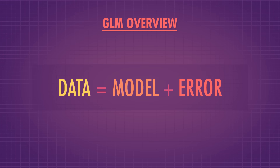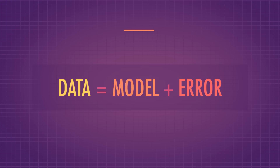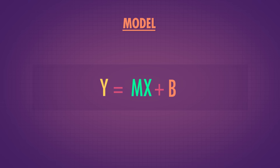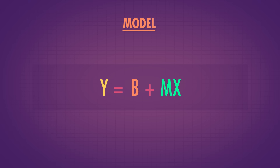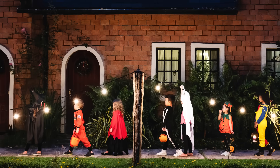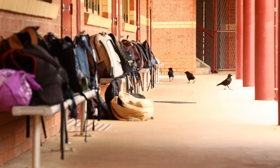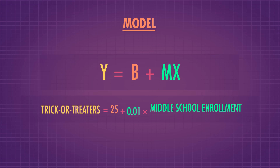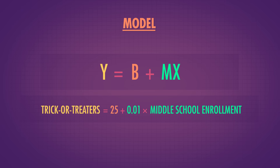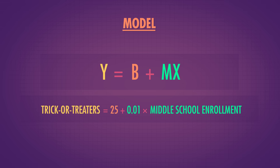General Linear Models say that your data can be explained by two things: your model and some error. The model usually takes the form y = mx + b, or rather y = b + mx in most cases. Say I want to predict the number of trick-or-treaters I'll get this Halloween by using enrollment numbers from the local middle school. I want to make sure I have enough candy on hand. I expect a baseline of 25 trick-or-treaters, and then for every middle school student, I'll increase the number of trick-or-treaters I expect by 0.01.